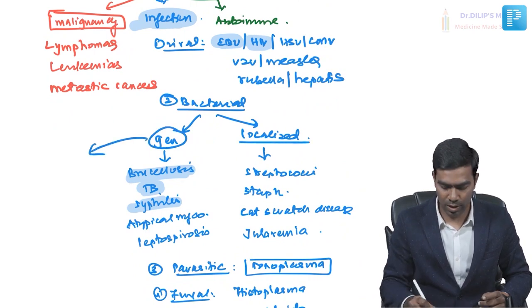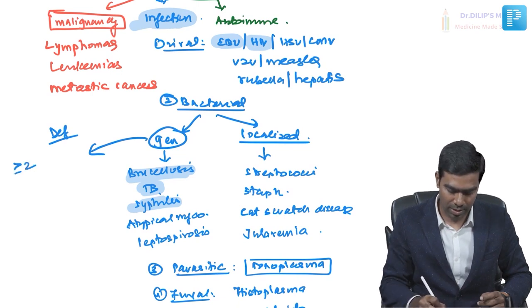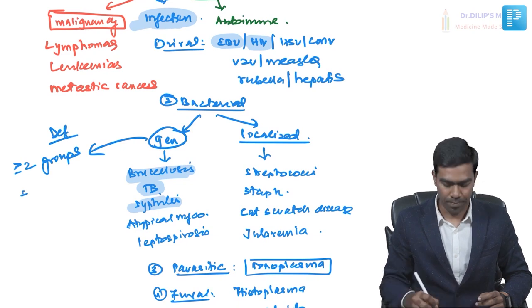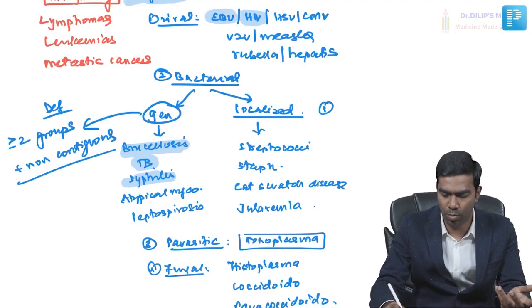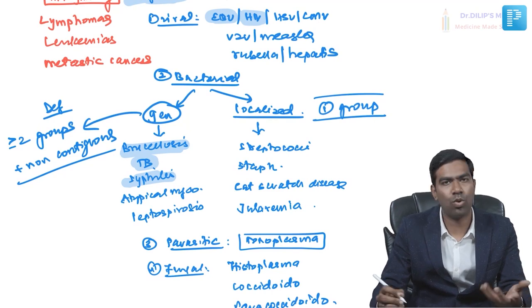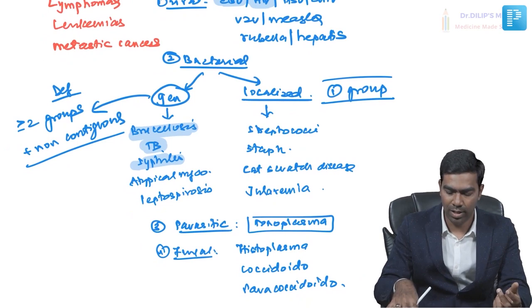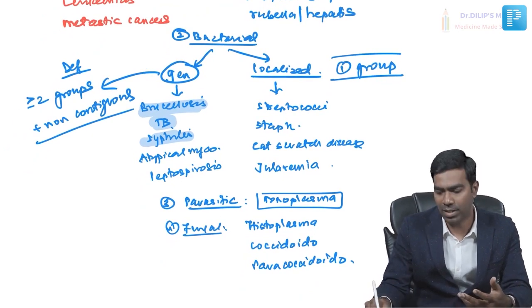Now, regarding the terms generalized and localized — the definition of generalized lymphadenopathy is when at least two lymph node groups are involved and they are non-contiguous, meaning not anatomically next to each other. For example, cervical plus inguinal nodes are non-contiguous. Axillary and cervical are contiguous, so that would not qualify. Localized lymphadenopathy means typically one lymph node group is involved, or two groups that are anatomically contiguous.